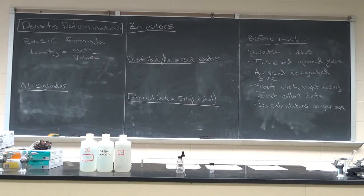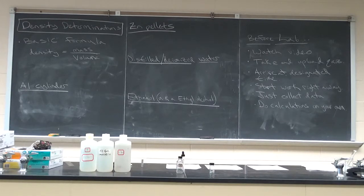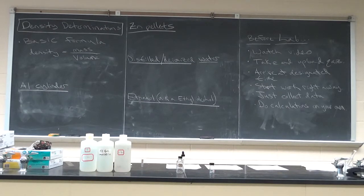Once you have the data for a particular part — aluminum cylinders, zinc pellets, and so forth — move on to the next one. Get the data and do all the calculations on your own, applying the rules for significant figures and all that good stuff. Make sure you bring all your eye protection, be properly attired — long pants, the whole bit, things we went over before. Let's go ahead and get started with the video.